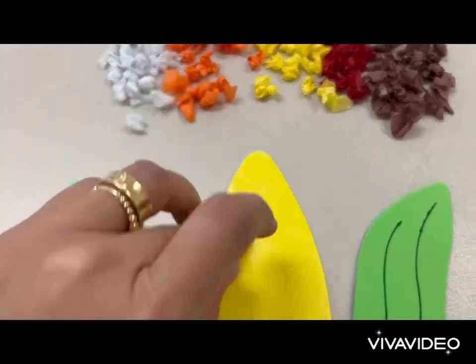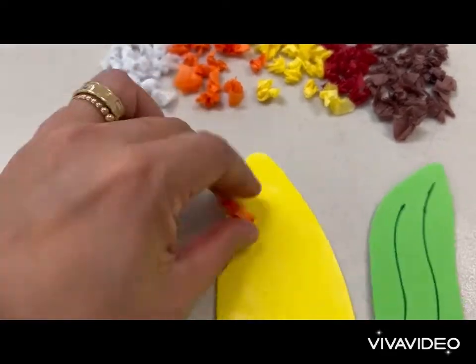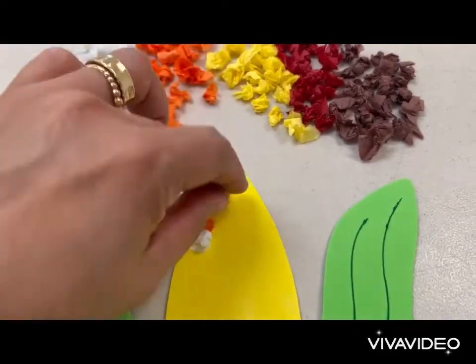Place onto the adhesive foam corn the crinkle tissue paper.